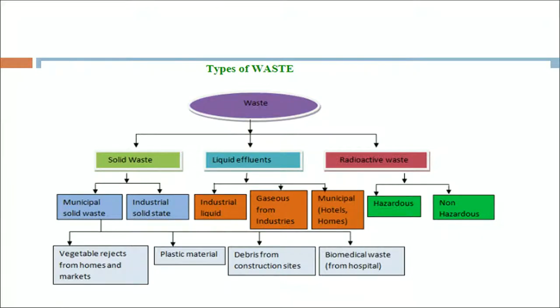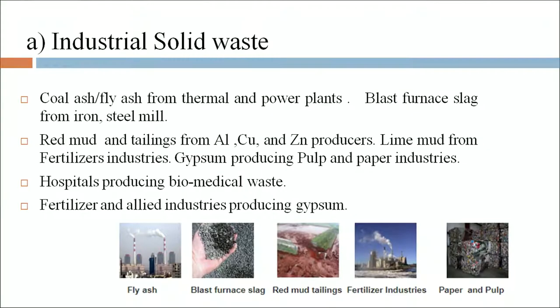Municipal solid waste comes in the form of vegetable rejects from homes and markets, plastic material, debris from construction sites and biomedical waste from hospitals. Sources of industrial solid waste include coal ash or fly ash from thermal and power plants, blast furnace slag from iron and steel mills, red mud and tailings from aluminum, copper and zinc producers, lime mud from fertilizer industries, gypsum from pulp and paper industries, and biomedical waste from hospitals.